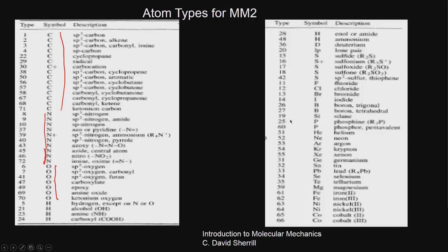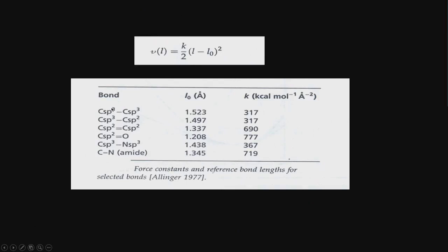If you have some other metal not in the list, MM2 cannot handle it and you may have to use another force field. Sometimes some software will assume a similar group metal and replace it. Each force field will have different sets of atom types and different parameter values. For example, looking at sp3 carbon, the L0 (R0) can be 1.523 Å, whereas for sp3-sp2 it becomes 1.497 Å, and the force constant also changes quite a lot depending upon the type of carbon.